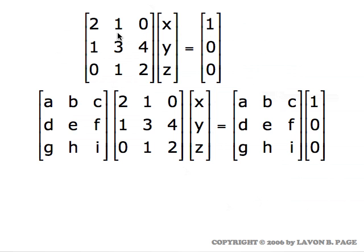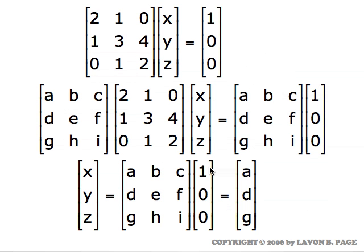Let's multiply both sides of the matrix equation on the left by that inverse matrix. Since the inverse times the coefficient matrix gives the identity matrix, the left side collapses to just the column x, y, z. On the right, multiplying out gives: a times 1 plus b times 0 plus c times 0 equals a at the top; the second row gives d, and the third row gives g. So the solution x, y, z equals a, d, g — the first column of the inverse matrix.